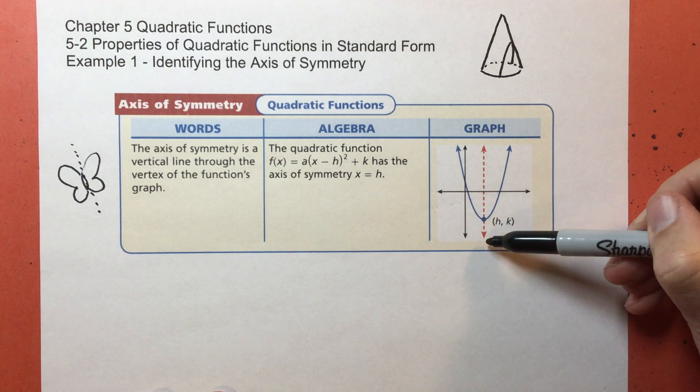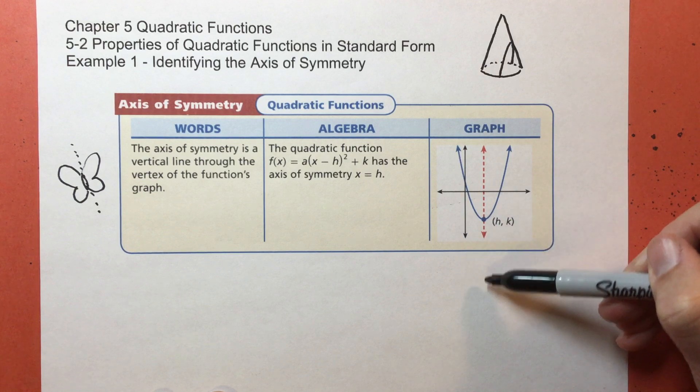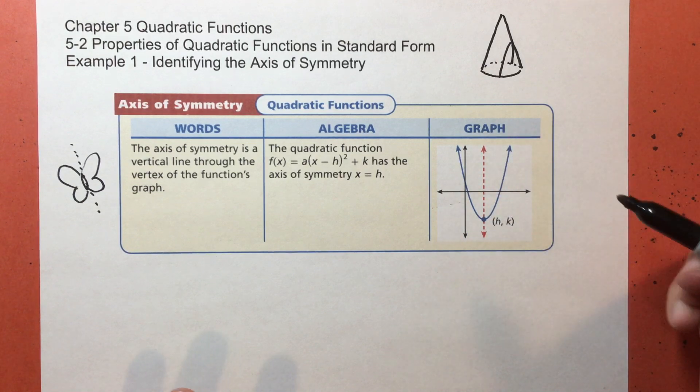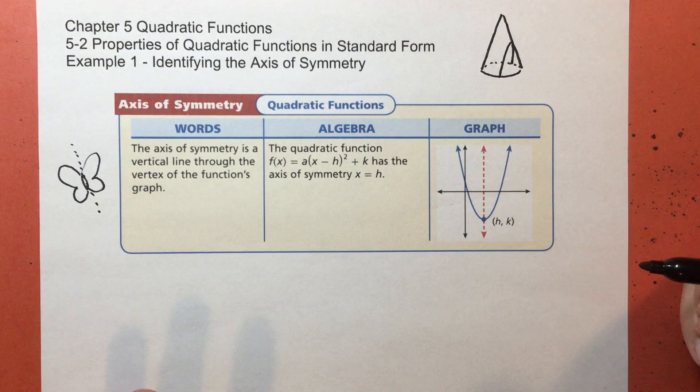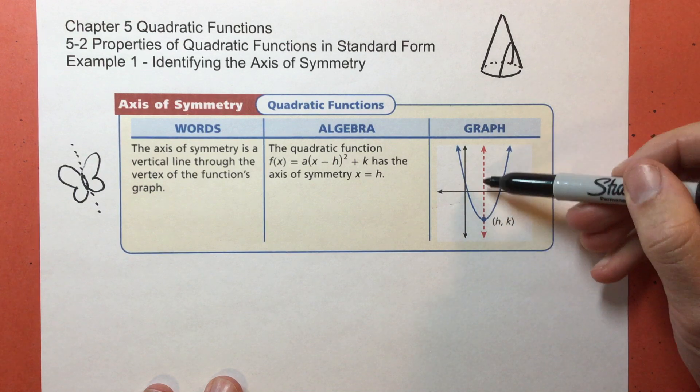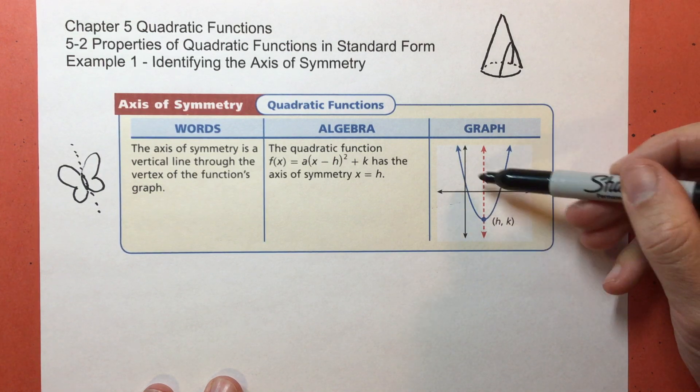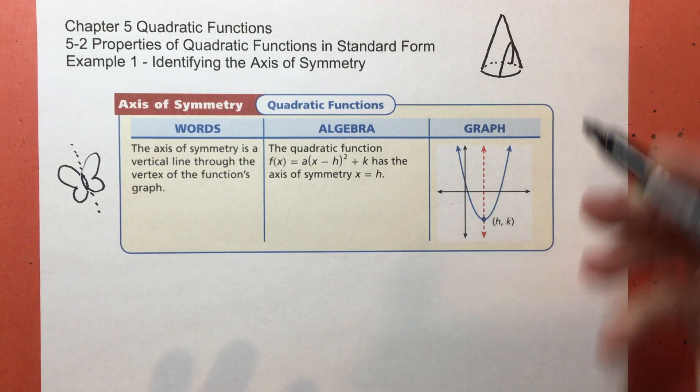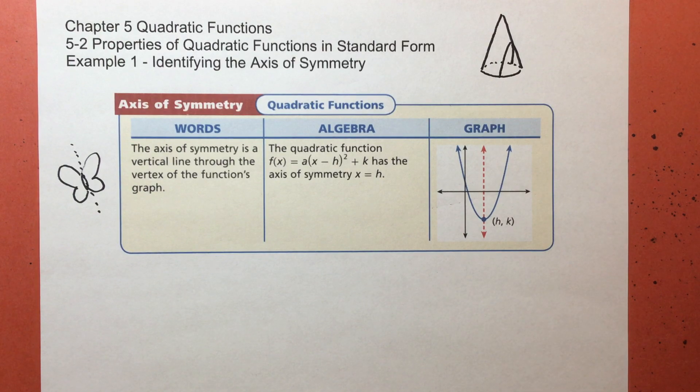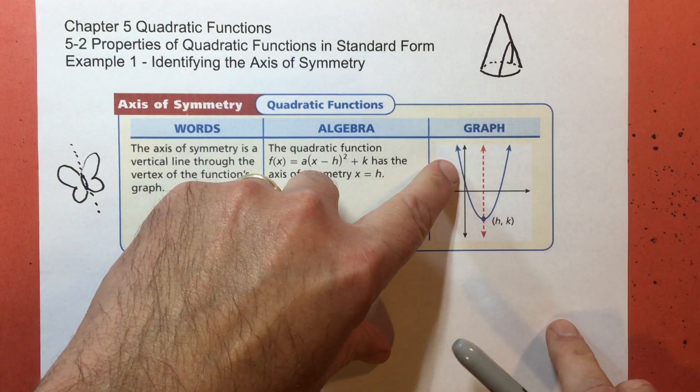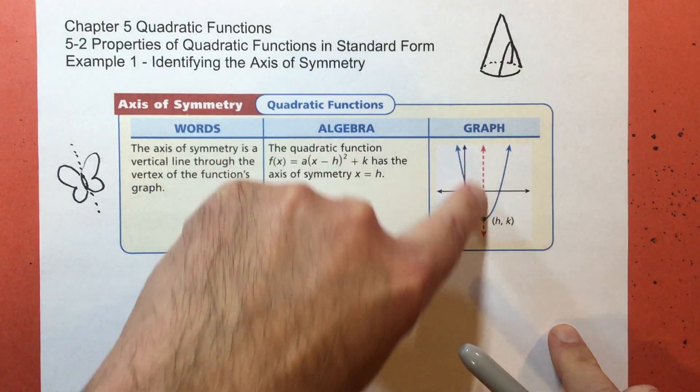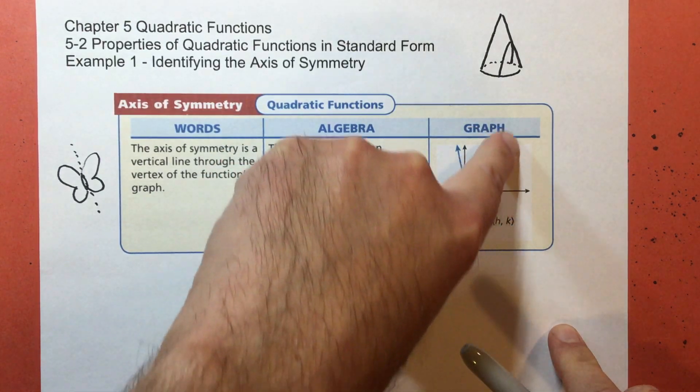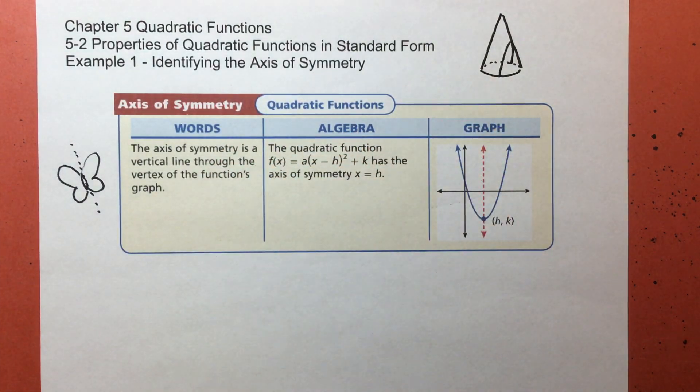If I draw a vertical line halfway through the graph, it will show you what the mirror is. So this side, if I flip it over this red dashed line, it matches up with this side. That line is called the axis of symmetry.